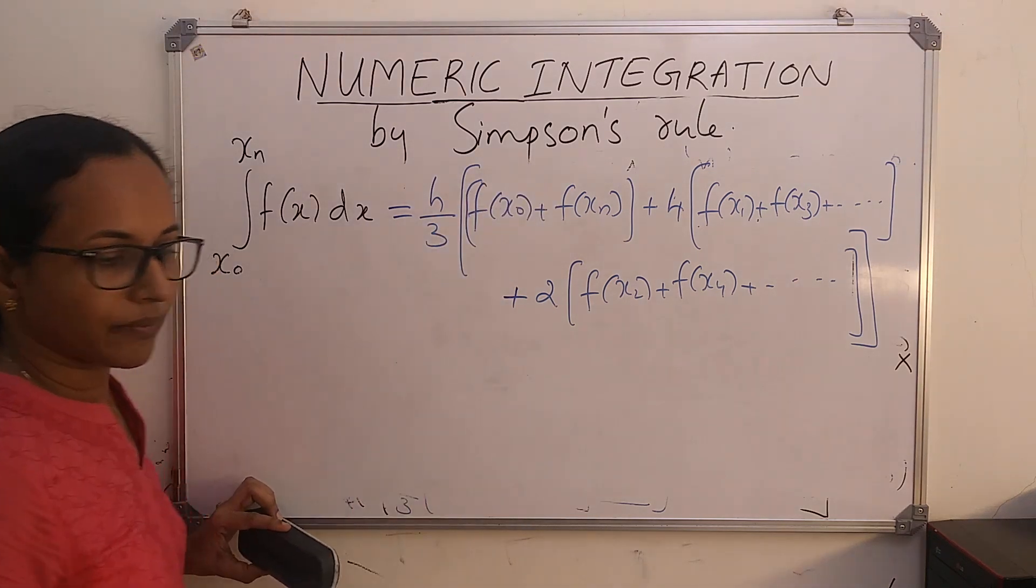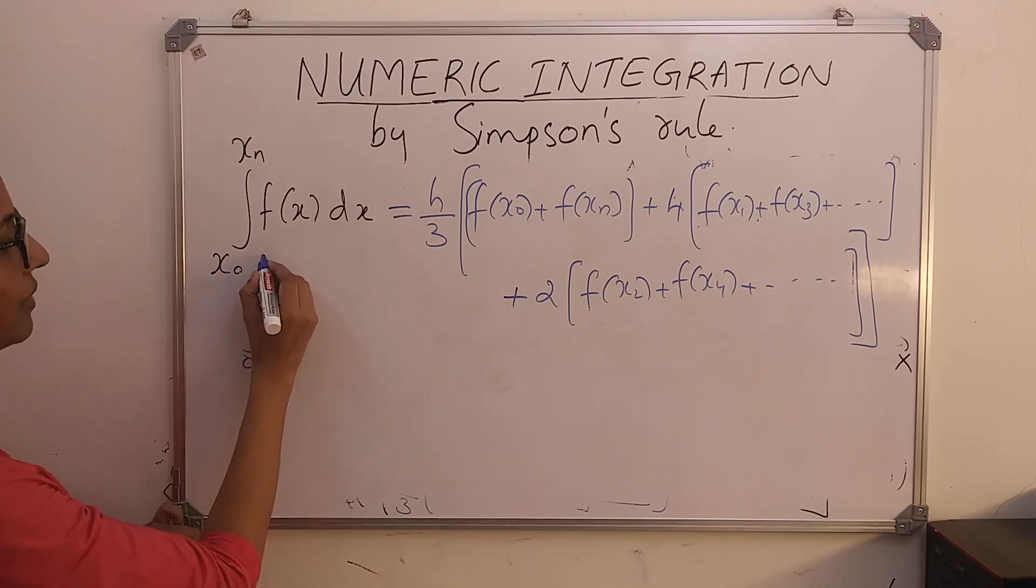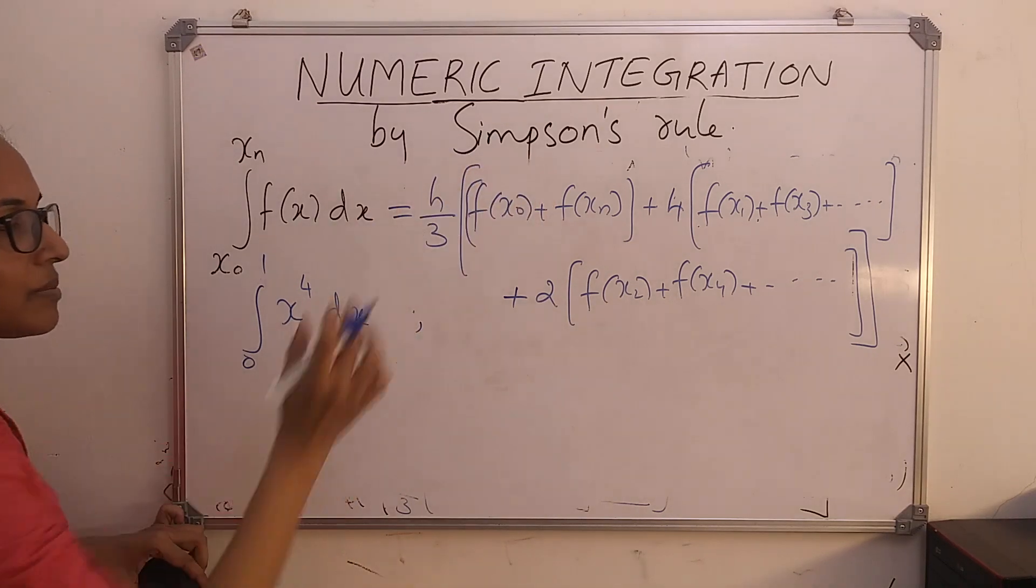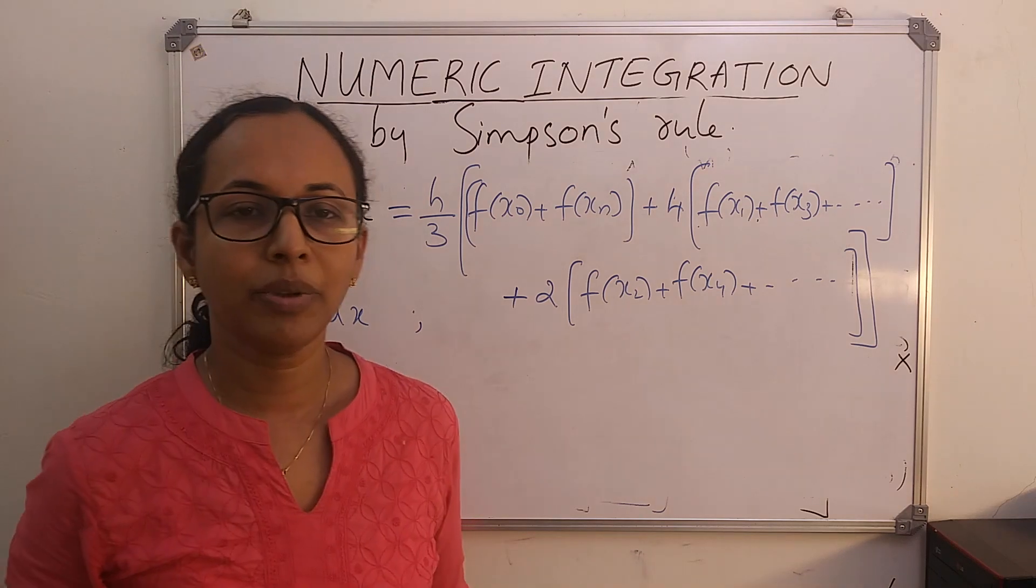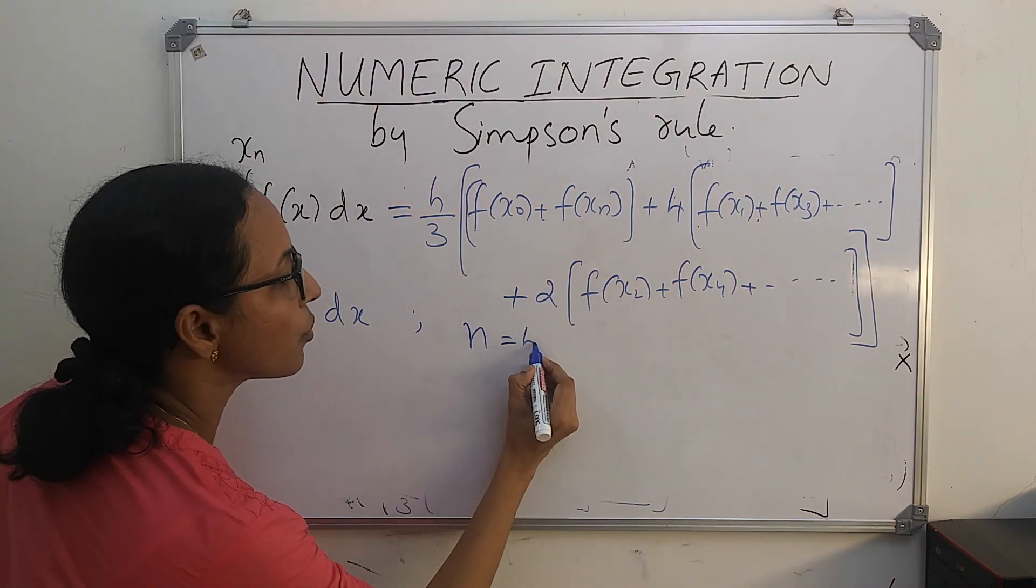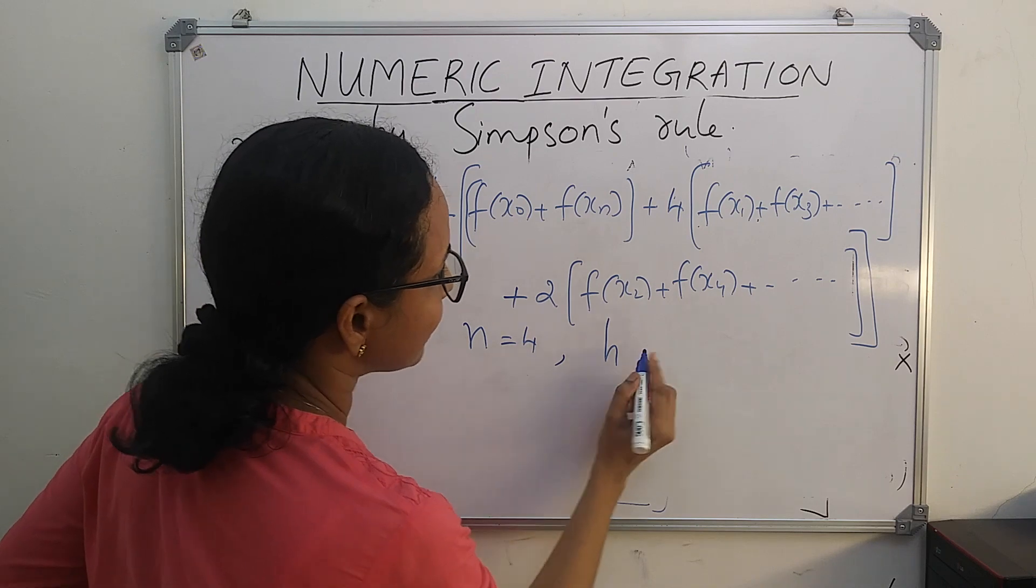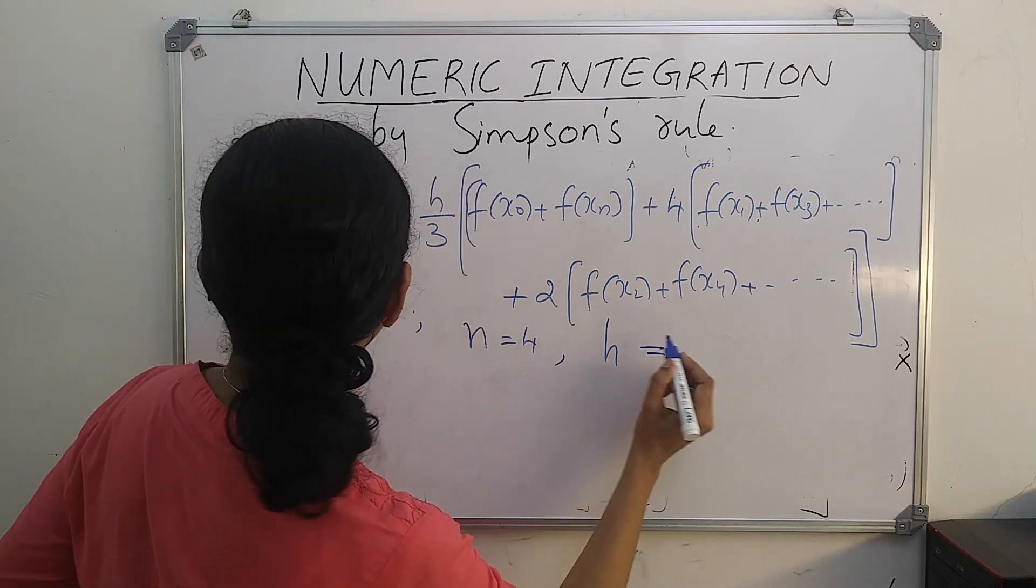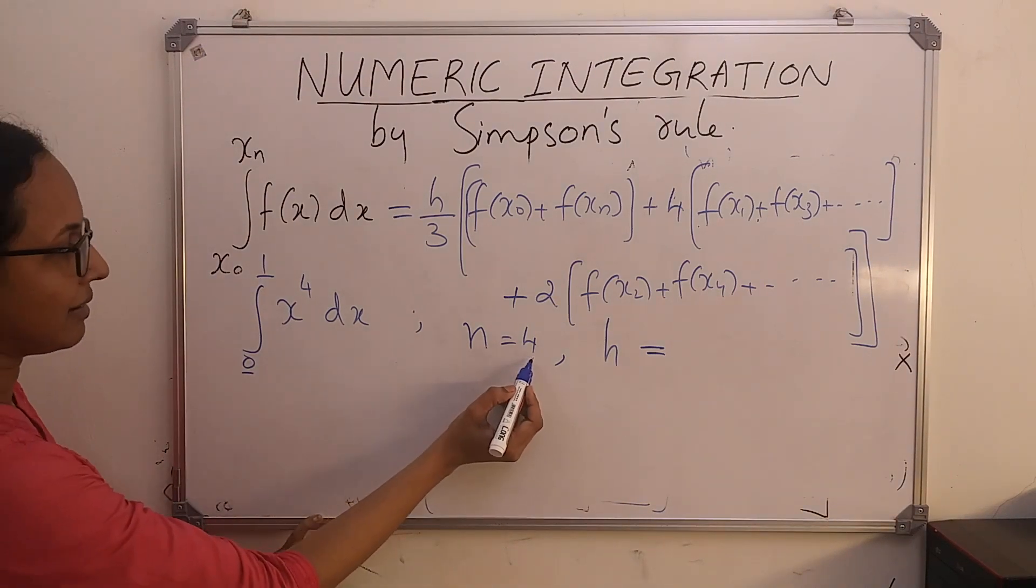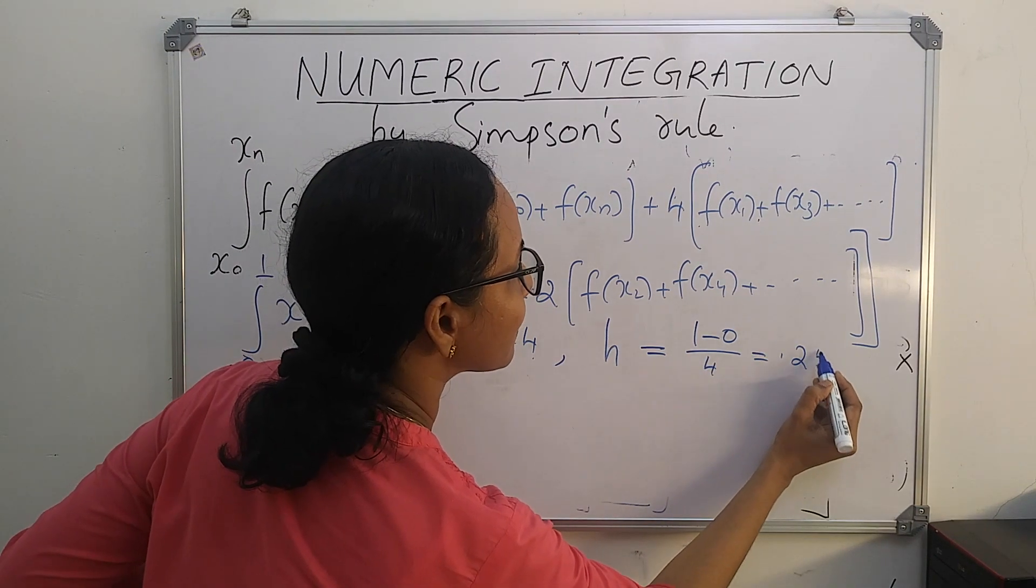Now we will explain this with an example. Consider integral 0 to 1 x raised to 4 dx. If we want to use Simpson's rule, the value of n should be an even number. Suppose I am choosing n equal to 4. Then the size of the interval will be h equal to xn minus x0 by n, that is 1 minus 0 by 4, equal to 0.25.